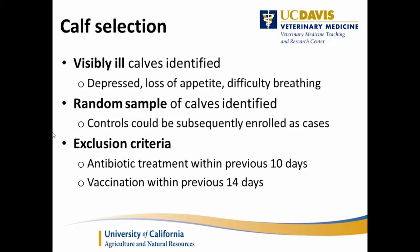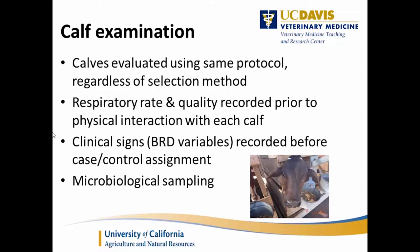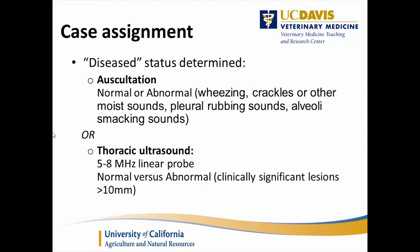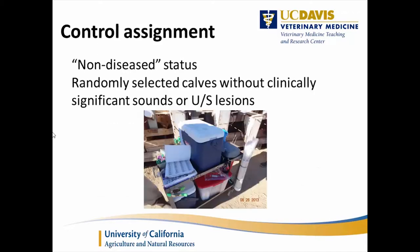We excluded animals that had received any antibiotics in the previous 10 days or were vaccinated in the last 14 days, as that would interfere with the microbiology. All calves were evaluated with the same protocol regardless of case/control status. Respiratory rate was determined prior to entering the hutch, and clinical signs were recorded before case-control assignment. Microbiology sampling was similar to the first study. For case assignment, a calf had to show an abnormality on auscultation or on ultrasound, using a cutoff of 1 centimeter for any lesions.